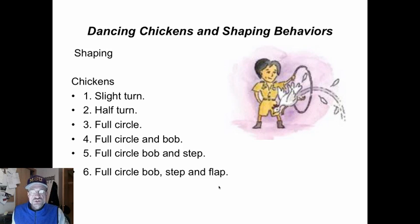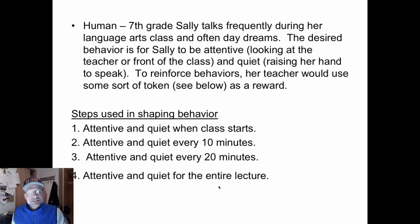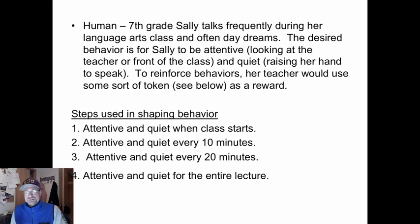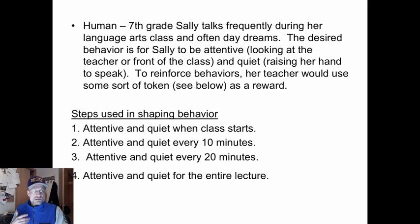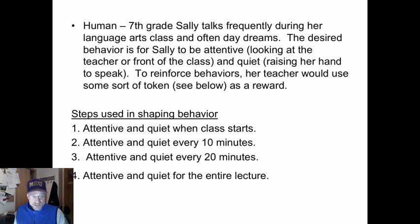That is how you teach a chicken to dance — and humans to dance as well. Let's get some human examples. Seventh grade: Sally talks frequently during her language arts class and often daydreams. The desired behavior is for Sally to be attentive — looking at the teacher or front of the class — and quiet, raising her hand to speak. To reinforce her behaviors, her teacher would use some sort of token.